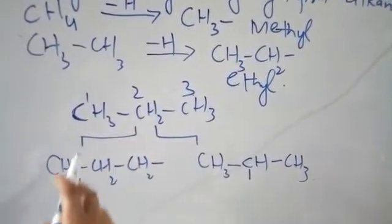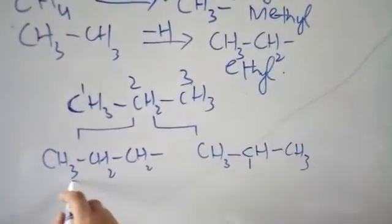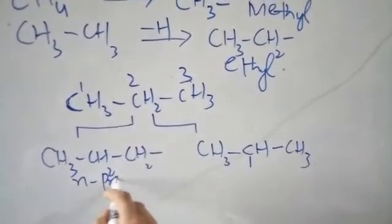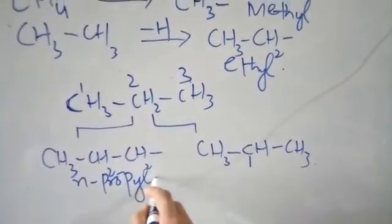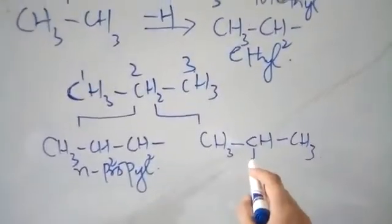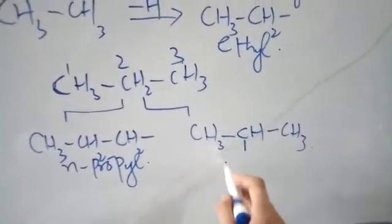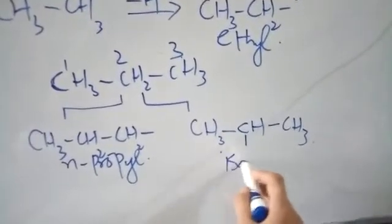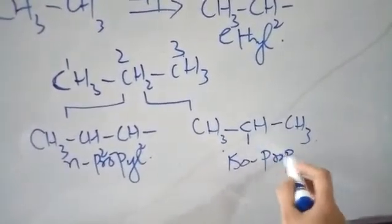So when we remove hydrogen from the terminal carbon of propane, this radical is called the N-propyl radical. But if we remove hydrogen from the central carbon, it is called the isopropyl radical.